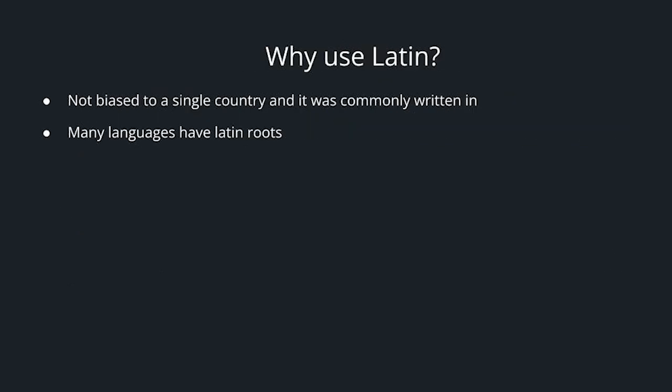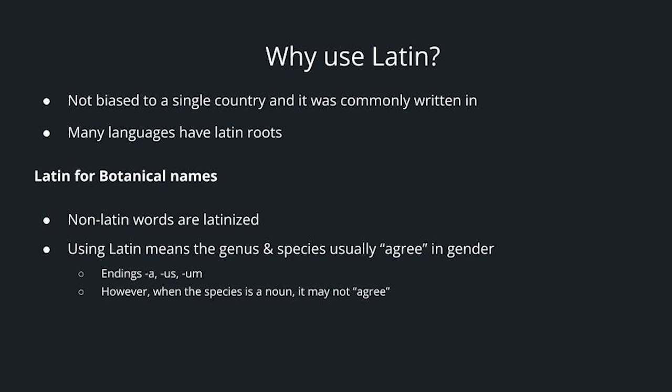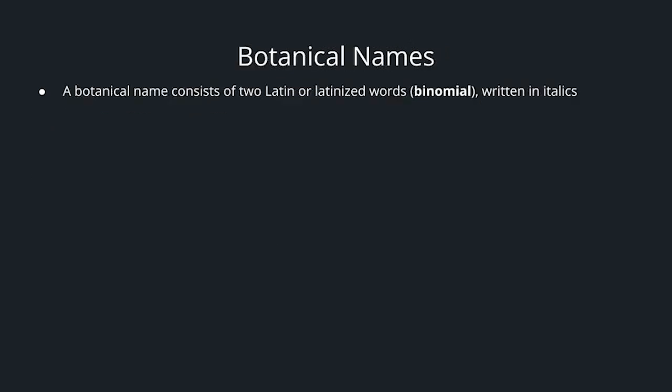Why did they choose to use Latin? It was not biased to a single country, it was commonly written in, and many languages have Latin roots. For botanical names, non-Latin words are Latinized. Since Latin has gender-specific endings, genus and species usually agree in gender, with matching endings of A, US, or UM. However, sometimes when a species is a noun, it may not agree. A botanical name consists of two or more Latinized words — that's considered a binomial — and they're always written in italics.